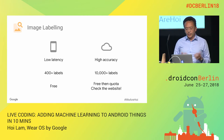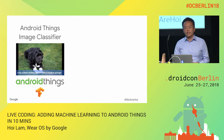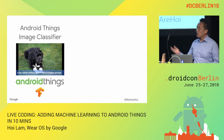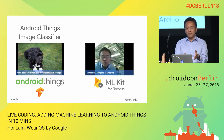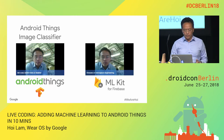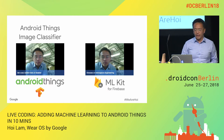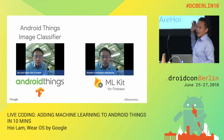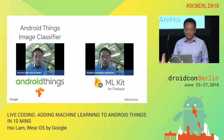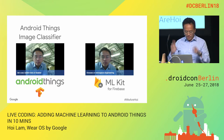I took the Android Things Image Classifier Colab, which looks like this. I implemented it — it labeled me as a lab coat, a bullet train, and a beaker. And then I plugged in the ML Kit API. Live coding time. Fingers crossed.